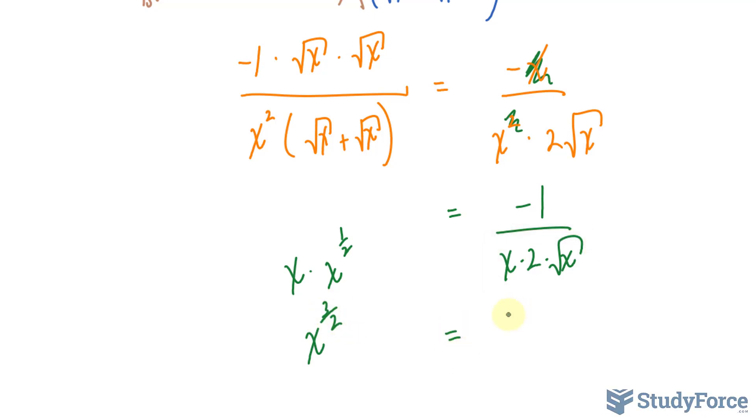And we have negative one over two at the bottom, the square root of x to the power of three. That's the answer.